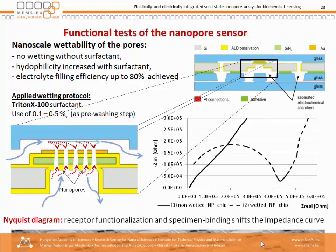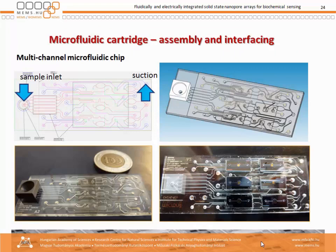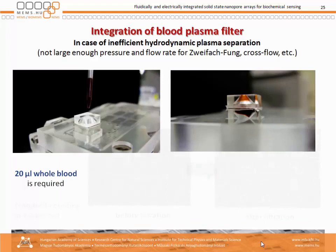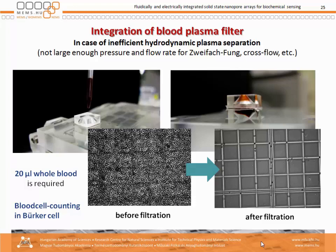Finally, the measurement results are shown here. If we don't use passivation of the shunting electrical path, we don't even get the Nyquist curve. However, with the complete system — about the size of one euro coin — if you get these microchannels, you obtain a device which is almost ready to be applied. Before filtration, we get coverage by blood cells; after filtration, we get blood cell counting in the Bürker cell, and these are then taken for biochemical characterization.